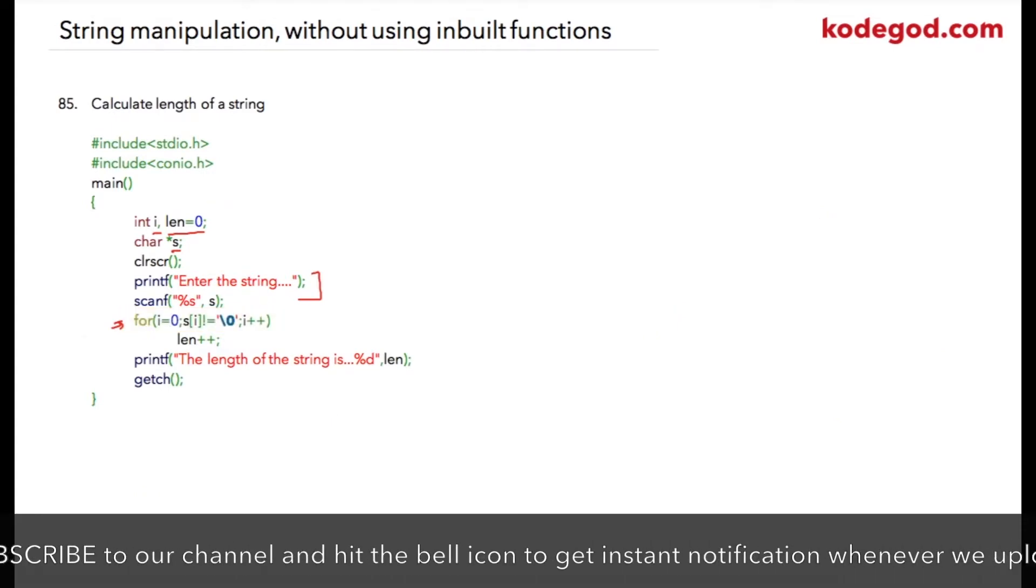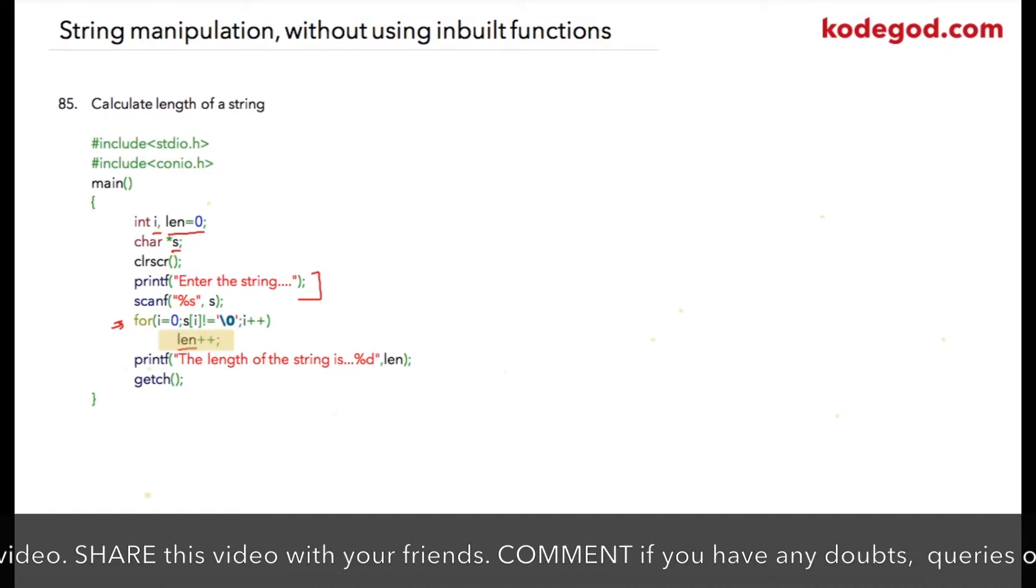For each iteration of the character, I am going to increase the len variable by one. Unless and until I reach the null character, this for loop will keep on executing and length will be incremented one by one.